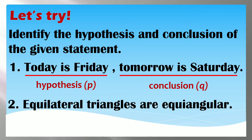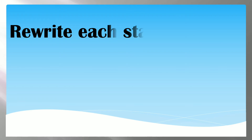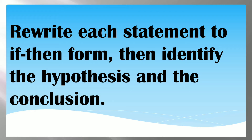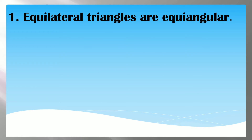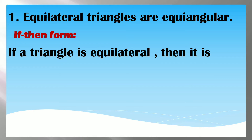'Equilateral triangles are equiangular' — can you identify the hypothesis and conclusion? When we have statements like this, we use the if-then form. So rewrite each statement to if-then form, then identify the hypothesis and conclusion. Its if-then form is: 'If a triangle is equilateral, then it is equiangular.'